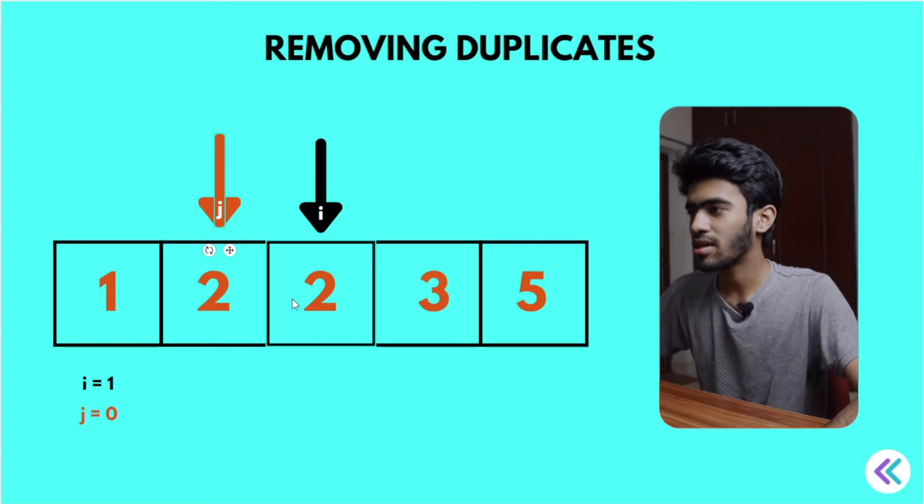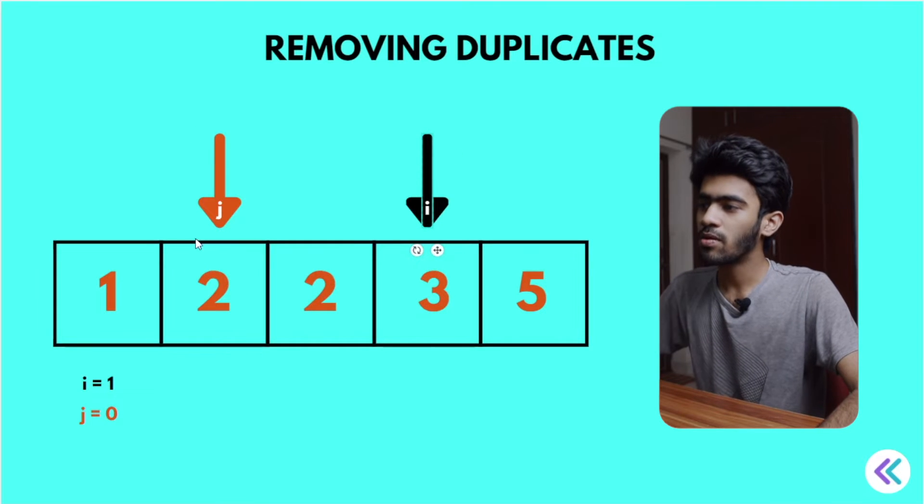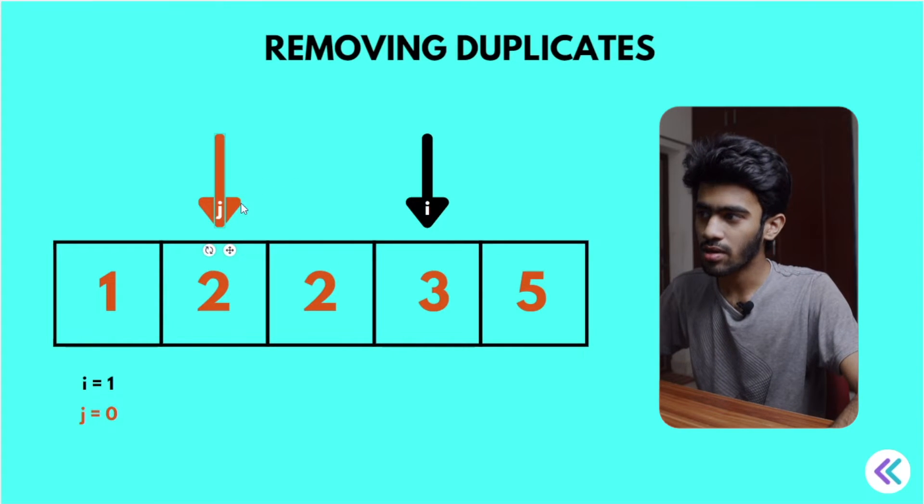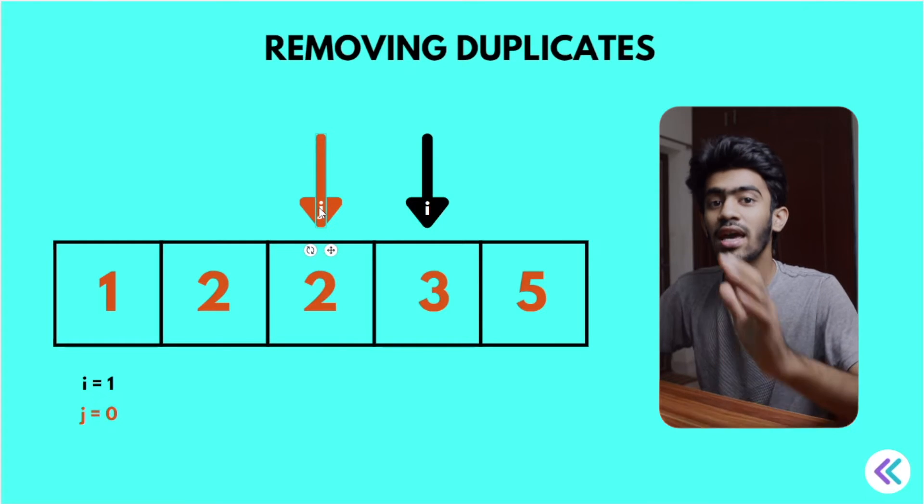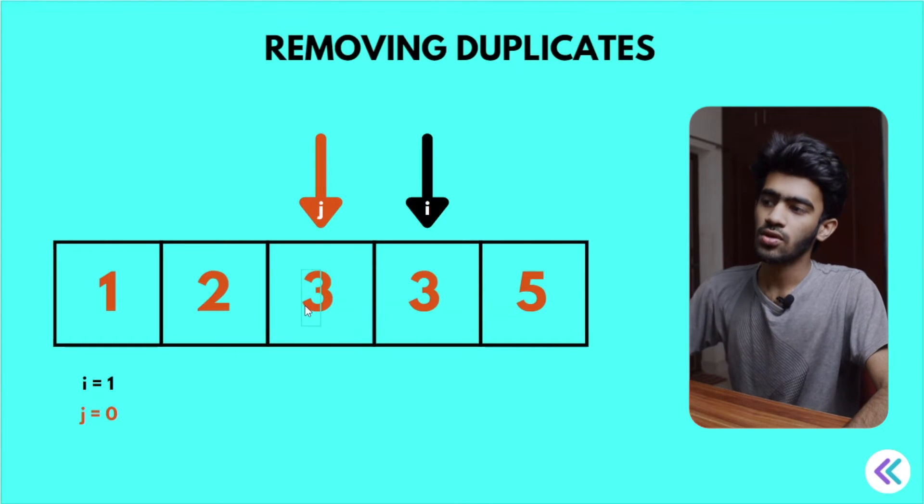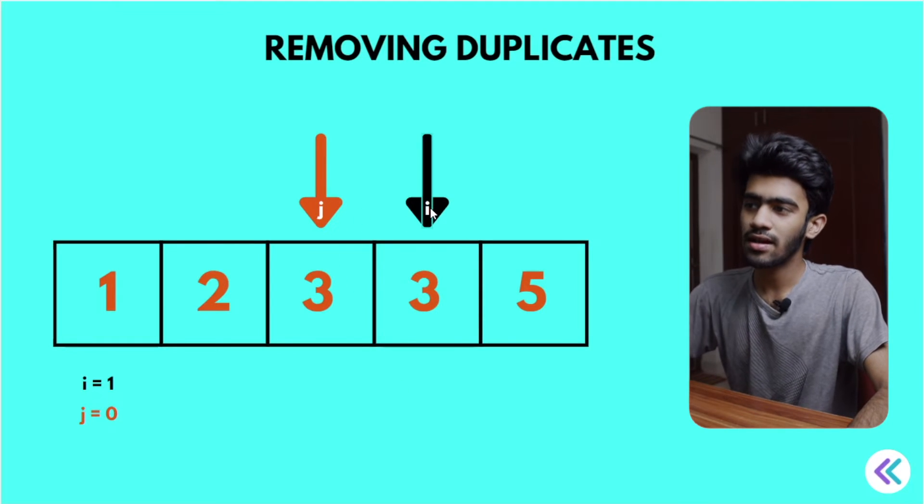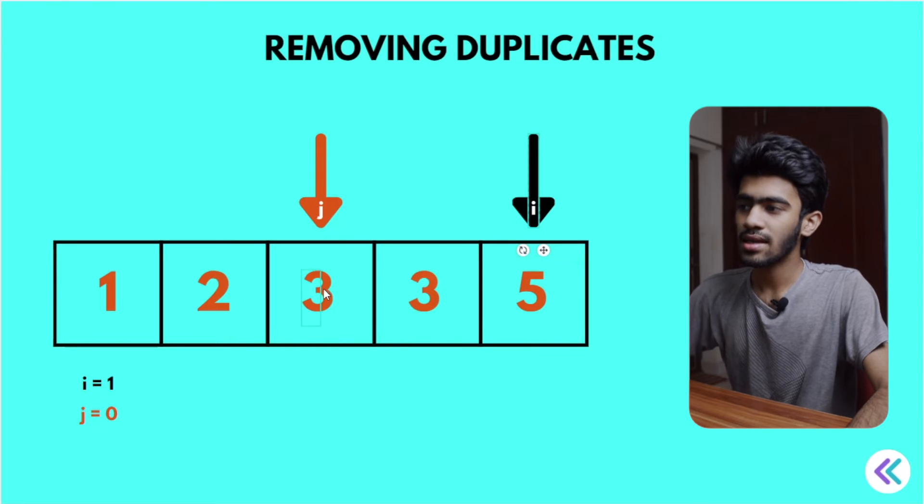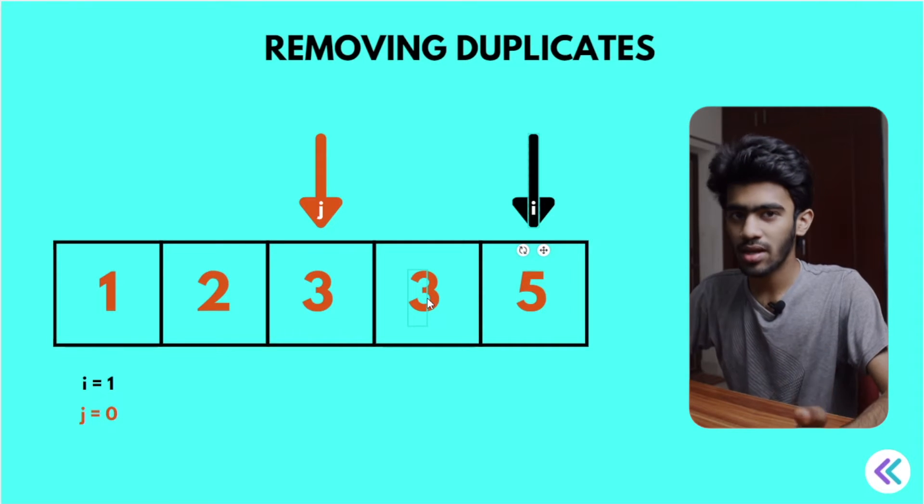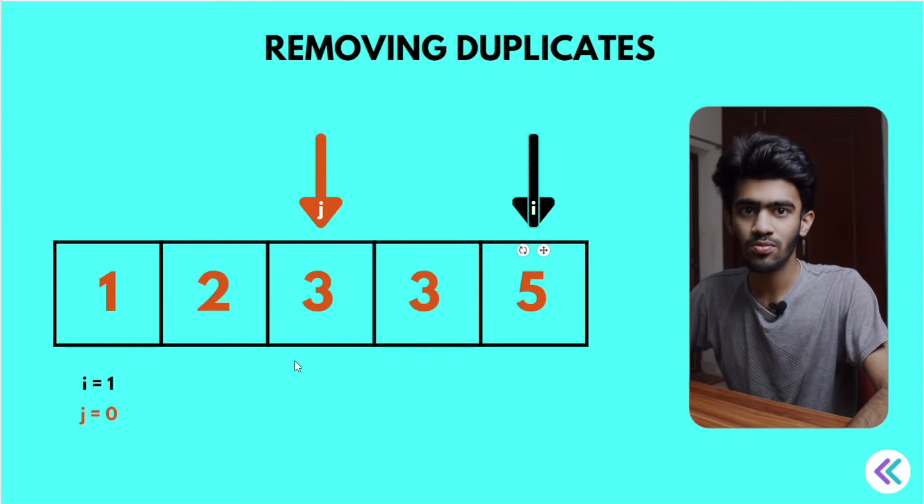If they're the same, j value increment at the end of iteration. So i value increment, and we substitute - a of j and a of i value substitute. Now i value increment. In this case here, 2 and the value of 3 is not equal.